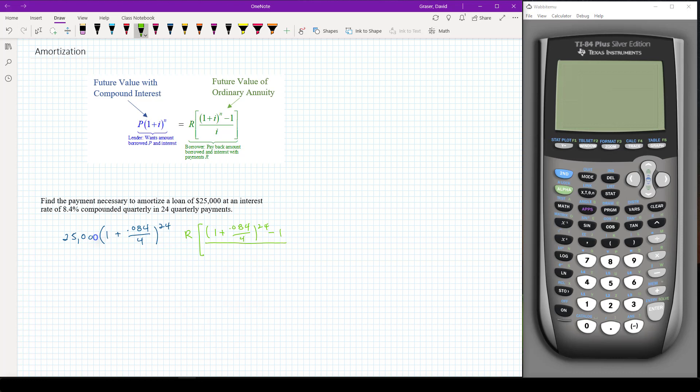And then on the bottom we're going to put 0.084 over 4 and those are set equal and they're going to allow us to solve for R.